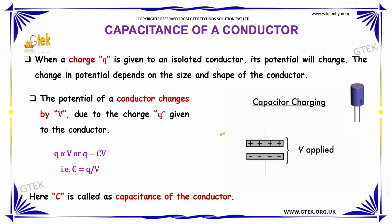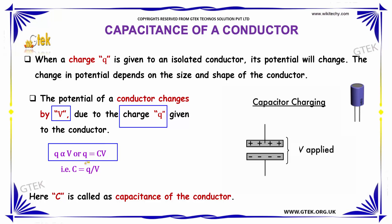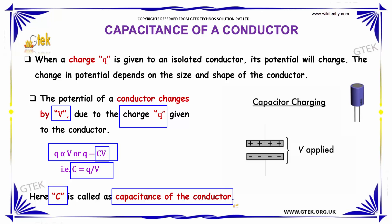The potential of a conductor changes by V due to the charge Q given to the conductor. This can be written as Q directly proportional to V, which can be replaced by a constant C. So we can write the equation as Q equal to CV, from which we obtain C equal to Q divided by V. Here, C is indicating the capacitance of a conductor.